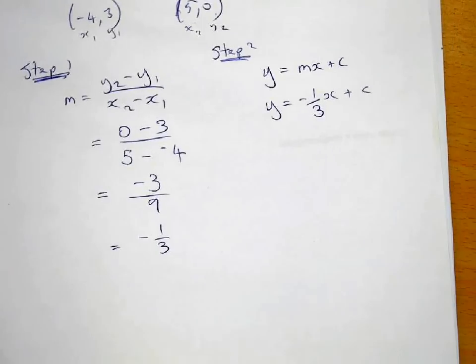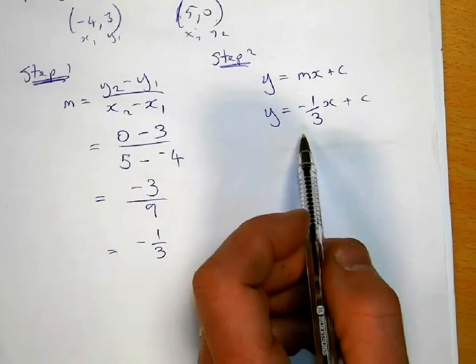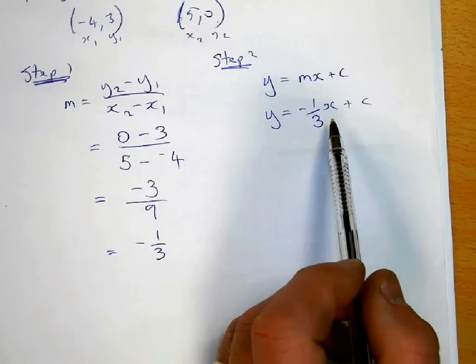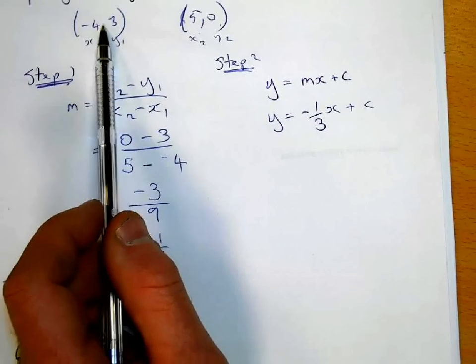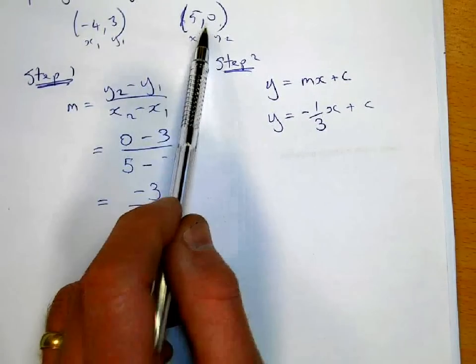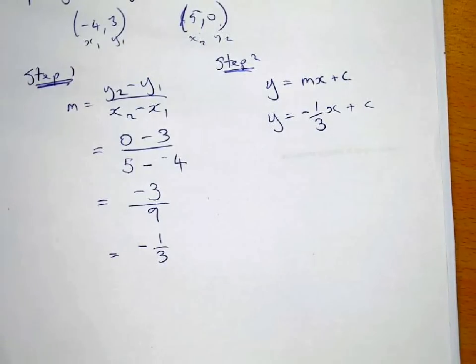Now to work out what c is, we have got to pick any coordinate that is on the line and put it into this equation. So we could use this coordinate or this coordinate. Yes? Yes, Holly? No, I'm not going to use your surname. Why do you want to do that?